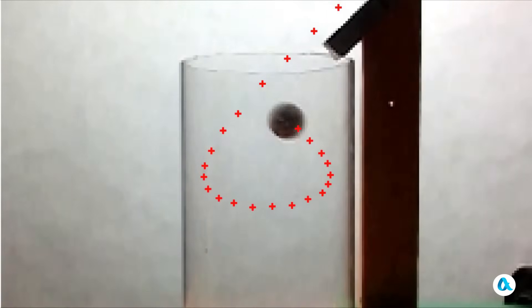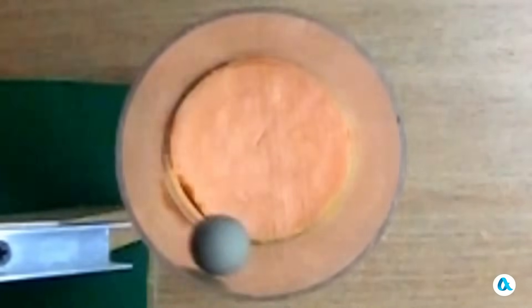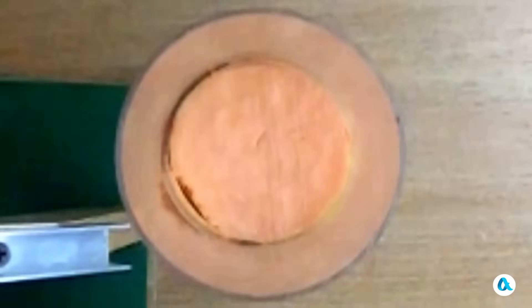And now, we will repeat this movement and trace it so you can see the trajectory that the ball described inside the tube. Here's the loop and the complete rotation with the exit. And here's what the ball's movement looks like from above. The rotation and the exit outside.